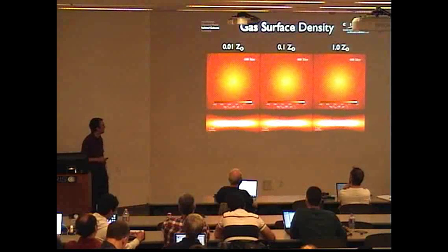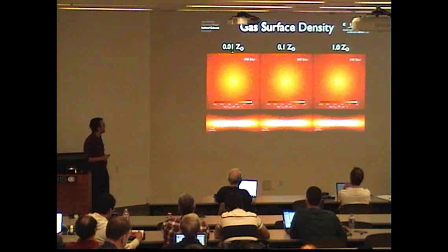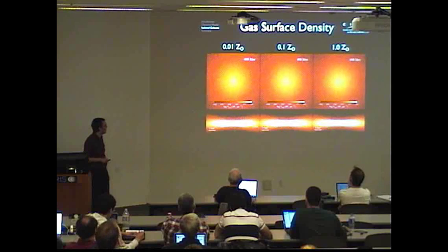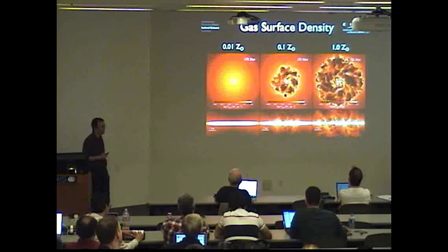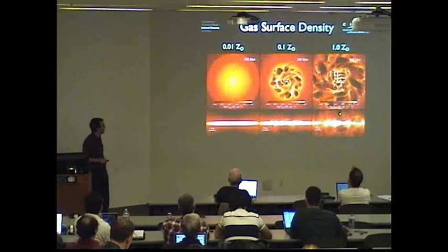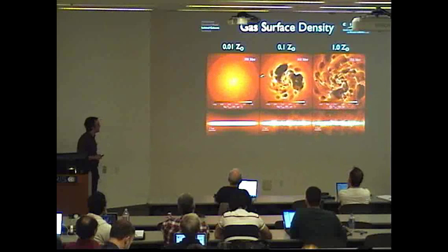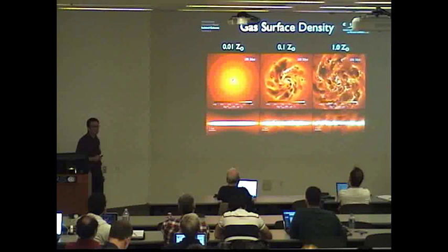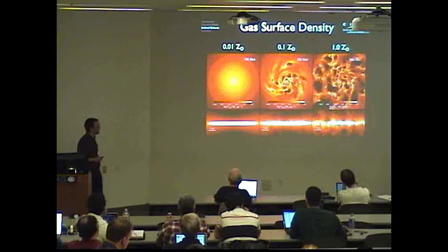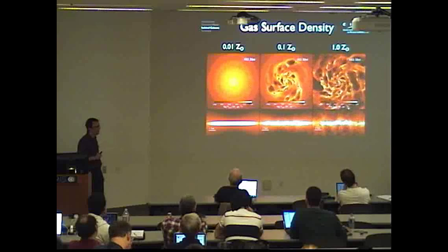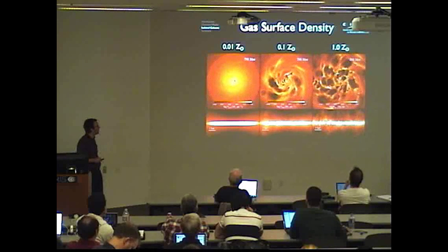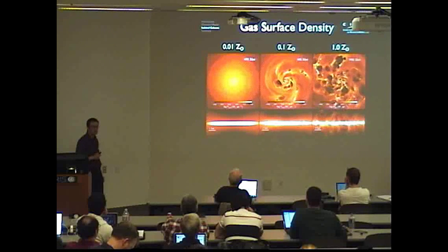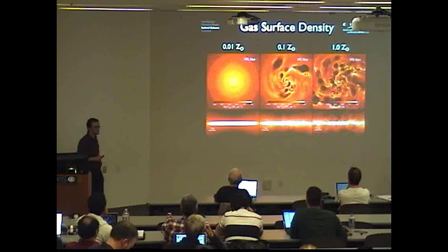Here we have three runs at different metallicities from 1% solar on the left up to solar metallicity on the right, looking at the gas disk face-on along the top and edge-on along the bottom. As stars form we see stellar feedback from supernovae creating bubbles of hot gas within the disk and driving outflows visible in the edge-on views. As we go to higher metallicity we see more star formation and hence more stellar feedback extending to larger radii. This is because metals are important for cooling the gas from a warm phase around 10^4 K down to the cold star-forming phase around 100 K — so higher metallicity makes it easier for gas to cool down and hence we see stronger star formation.